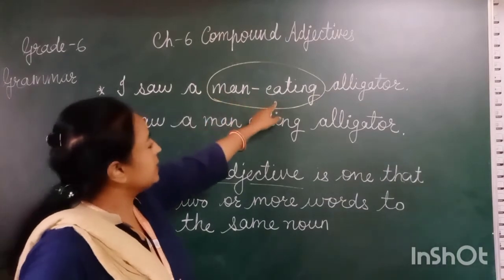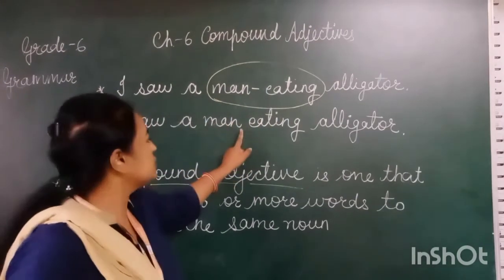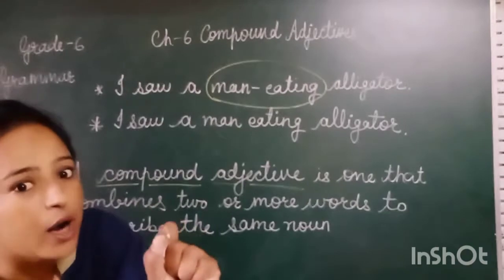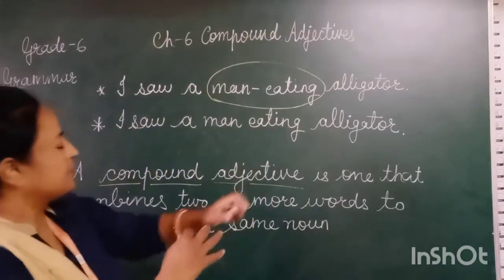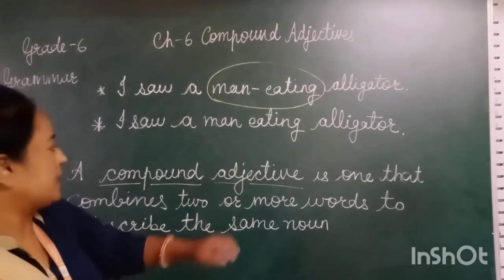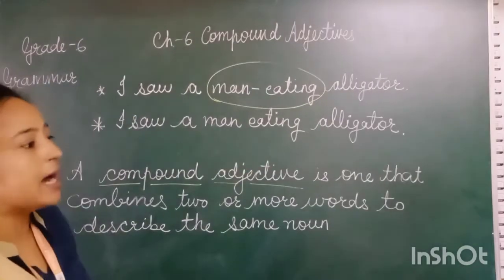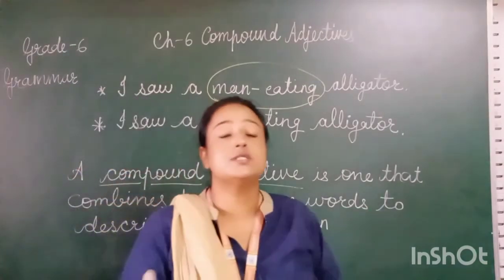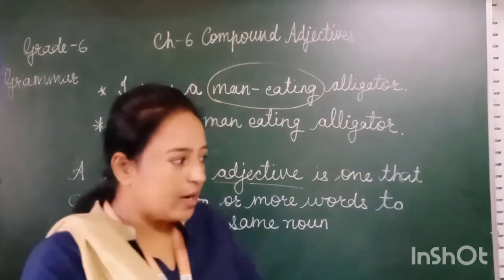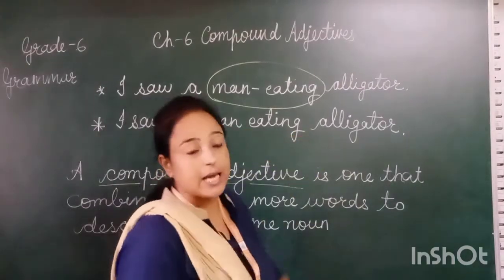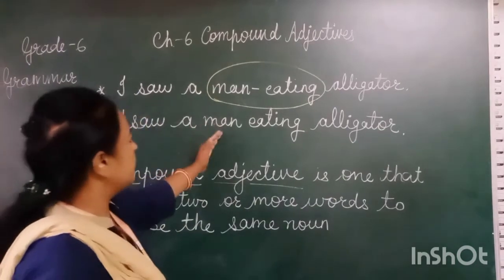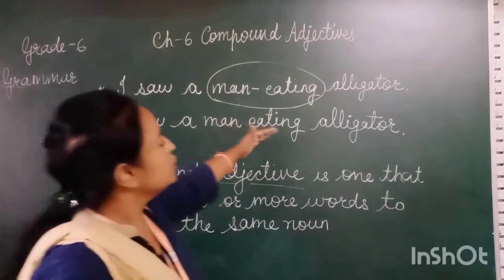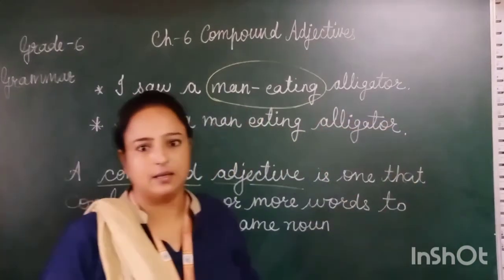In the first sentence there is a hyphen: 'man-eating.' In the second sentence there is no hyphen — no small dash. That difference in shape between the two sentences is very important. If you don't use a hyphen, the meaning of the whole sentence changes completely to the opposite. 'I saw a man-eating alligator' versus 'I saw a man eating alligator' are completely different.